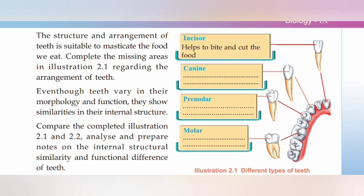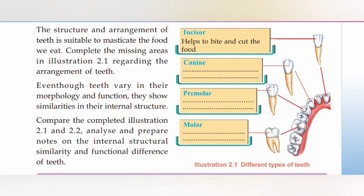Even though teeth vary in morphology and function, they show similarities in the internal structure. The external structure is different but the internal structure is similar. Here we can see the same function as the incisors, canines, pre-molars and molars. It helps to bite and cut the food — that is the function of the incisors.